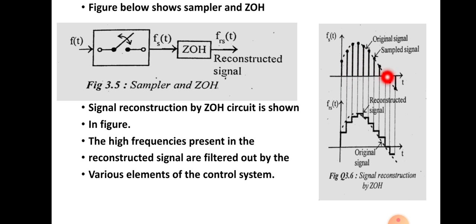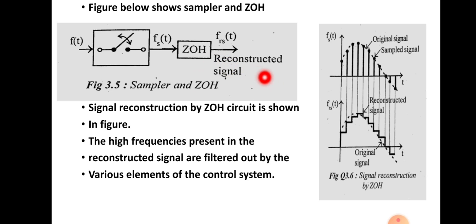From these signals, we want to reconstruct the original signal, so we are using this ZOH. Once the signal passes through this zero-order hold circuit, its working is that the signal is reconstructed such that the value of the reconstructed signal for the sampling period is same as the value of the last received sample.